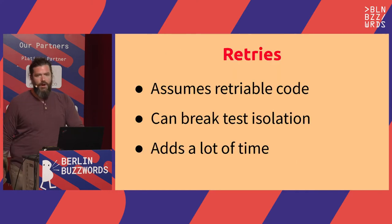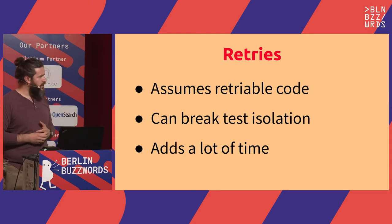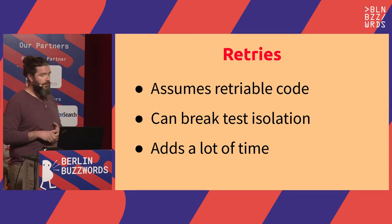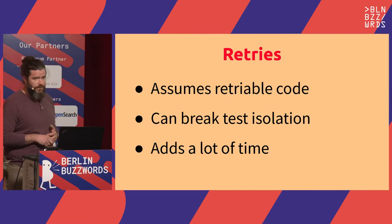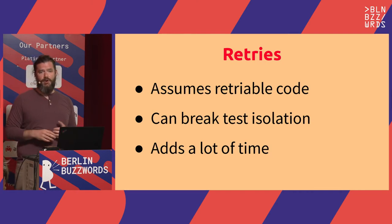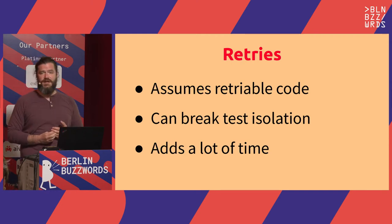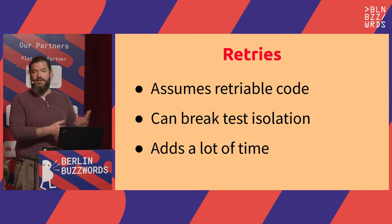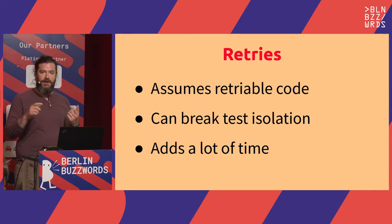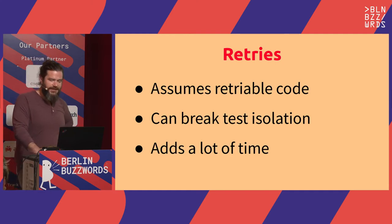This can be exacerbated by tests that rely on more moving parts, which makes that flake rate go up. One of the ways people have dealt with this traditionally is to retry things that fail. This assumes you can have retryable code, which is not always easy, particularly when state is involved. It can break test isolation. But more crucially, it adds a lot of time — retrying an expensive test can add minutes and even hours. It's not necessarily a bad solution, but it's not the only one we should be looking at.